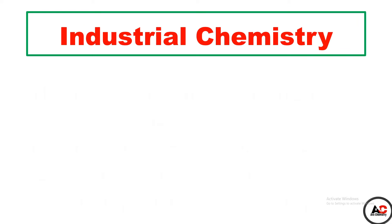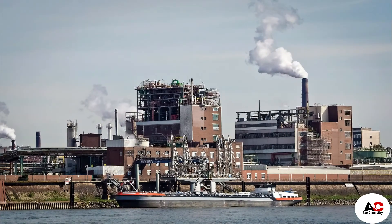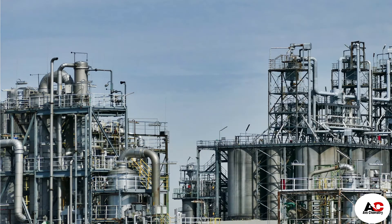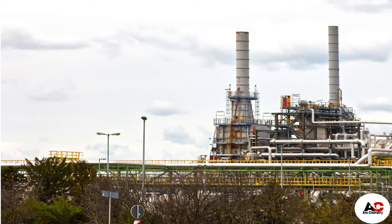What is industrial chemistry? The branch of chemistry that deals with methods and use of technology in the large scale production of useful substances is called industrial chemistry. یعنی industrial chemistry، chemistry کی وہ branch ہے جس میں ہم different methods اور technology کو use کرتے ہوئے اپنی designed products کو large scale پر produce کرواتے ہیں۔